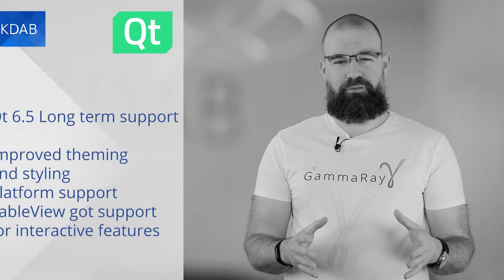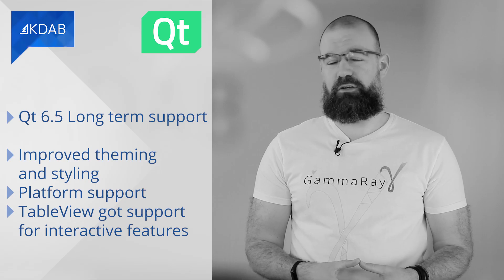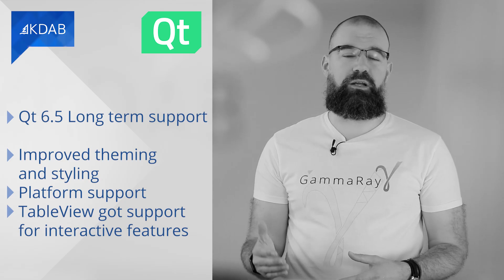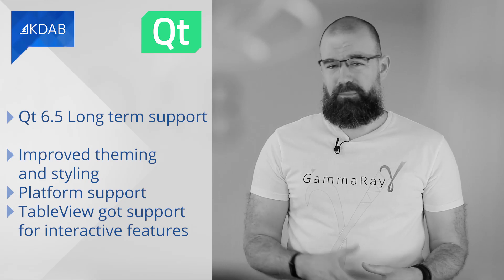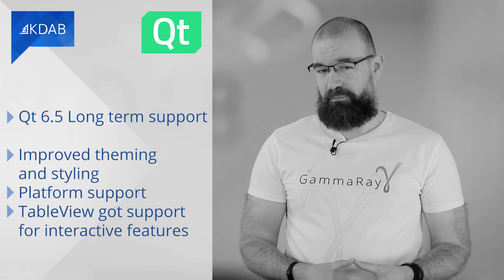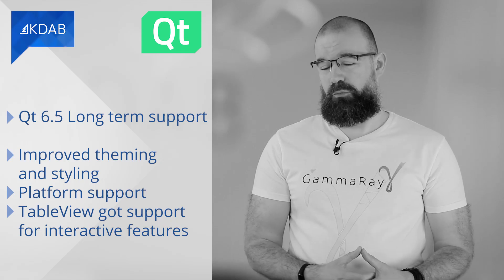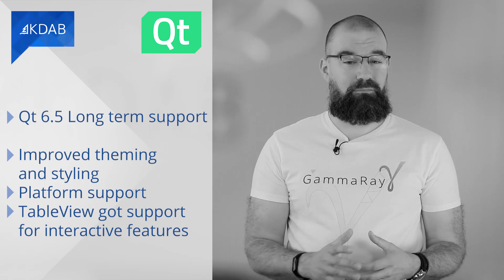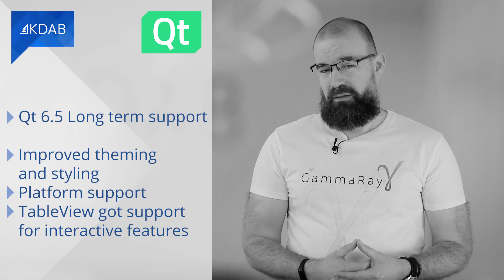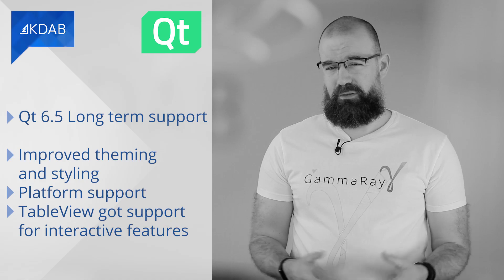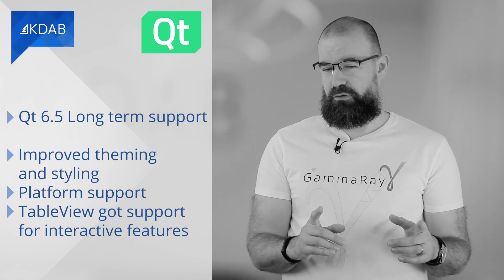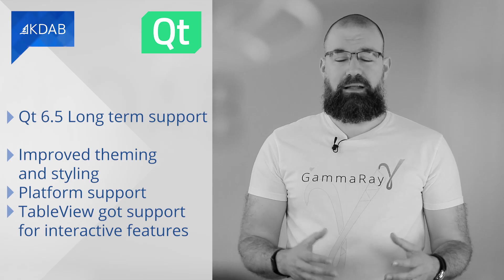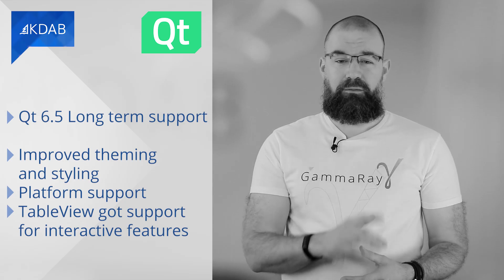Qt 6.5 is the next Qt version with long-term support after version 6.2. It brings many fixes and general improvements, as well as new functionality for graphics and UI developers and the application backend. Among the highlights, there's improved theming and styling. For example, applications can easily support dark mode on Windows. And Qt Quick Controls now includes the iOS style, implementing also many controls that don't have an equivalent on native iOS. There are also improvements to platform support. With Qt 6.5 comes support for Android 12, while making sure that Qt keeps working as expected on the older versions. The update further adds new features on top of Qt 6.4 and previous Qt 6.4 releases.